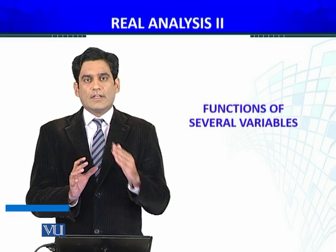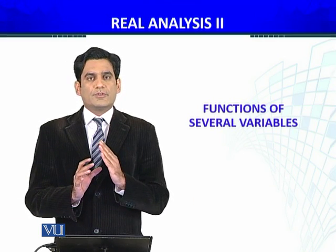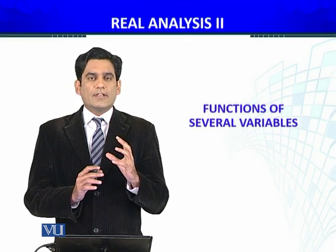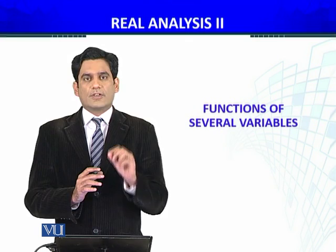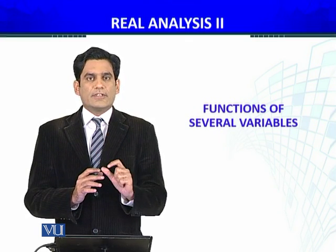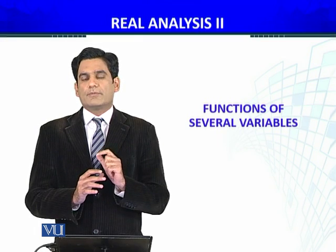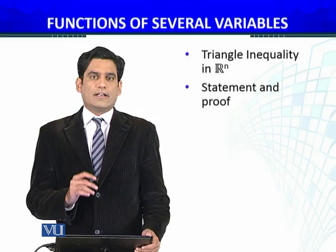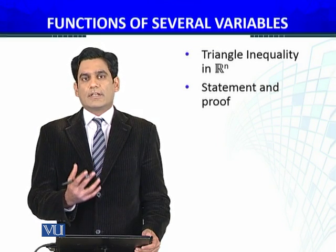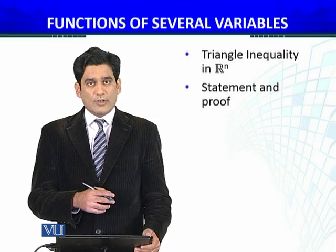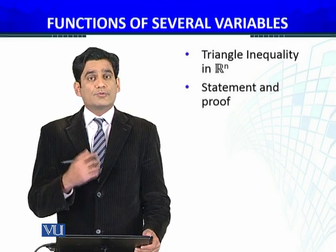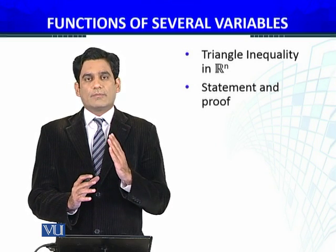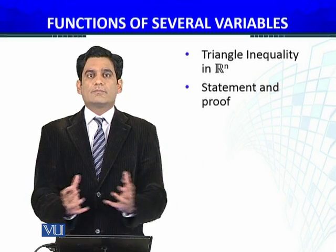We have the Triangle Inequality. If you remember, in the real number system and Euclidean spaces R^N — which I introduced in N equals 1, and which we discussed in Analysis 1 about real numbers — I discussed the Triangle Inequality. R^N are Euclidean spaces whenever N is greater than or equal to 1. We will also discuss the Triangle Inequality in R^N, which are Euclidean spaces, for any positive number N greater than or equal to 1.